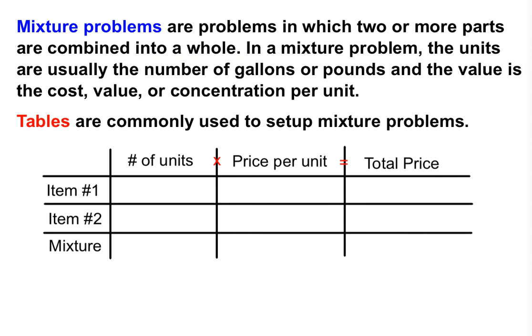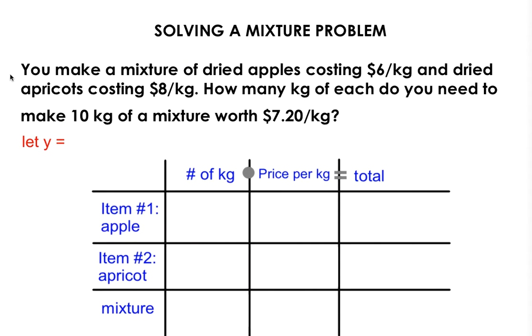Let's check out a sample problem. You make a mixture of dried apples costing $6 per kilogram and dried apricots costing $8 per kilogram. How many kilograms of each do you need to make 10 kilograms of a mixture that's worth $7.20 per kilogram?